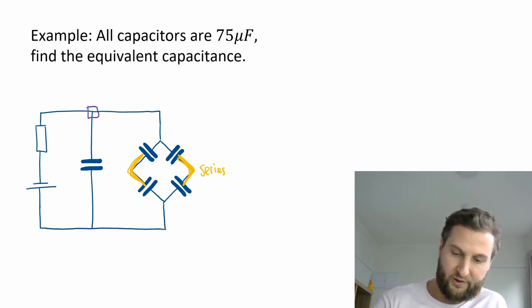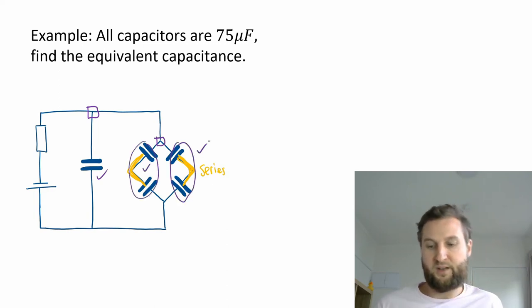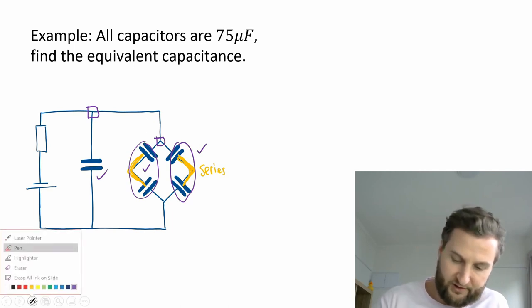So we have series, series. And then we have actually three in parallel. So I have one node there and one node there, leading to three branches in parallel. So let's do the series ones first and then simplify it.